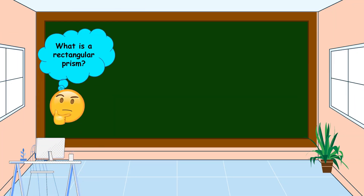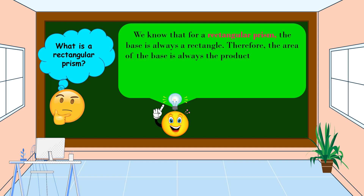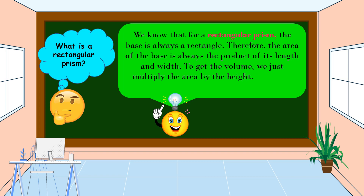What is a rectangular prism? For a rectangular prism, the base is always a rectangle. Therefore, the area of the base is always the product of its length and width. To get the volume, we multiply the area by the height. Thus, the volume of a rectangular prism is length times width times height.